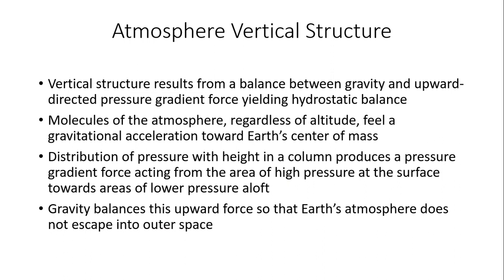When we talk about atmospheric vertical structure, the vertical structure overall results from a balance — that's the key term. Everything in nature seeks balance or equilibrium. When we talk about the atmosphere, the vertical structure results from a balance between the downward-directed force of gravity and the upward-directed pressure gradient force, acting equal and opposite to each other. This yields what's known as hydrostatic balance.